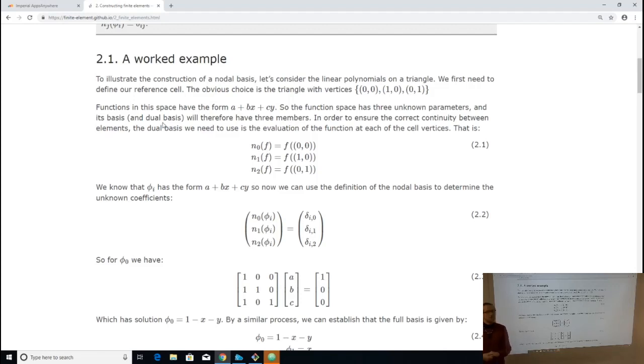So a point evaluation node is a function which takes in a function as an argument, and the number it gives back is that function evaluated at a particular predetermined point. And the point that you use is what defines that node. So a point evaluation node is defined by the point at which it evaluates the incoming function.